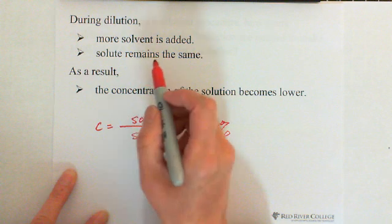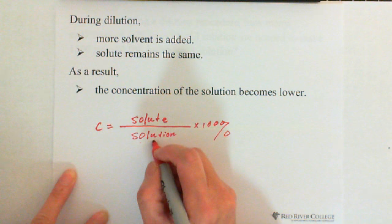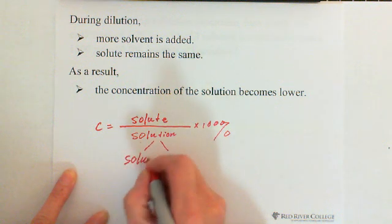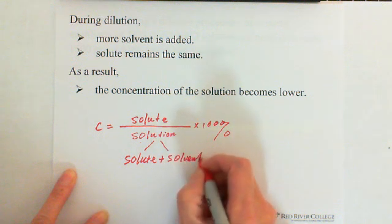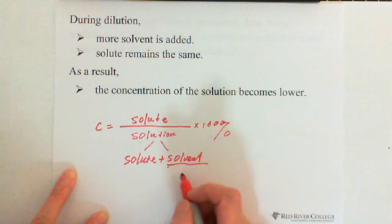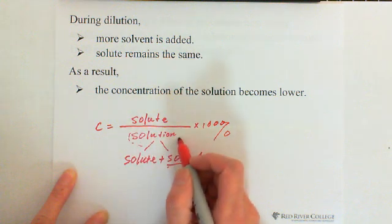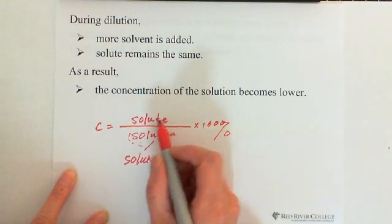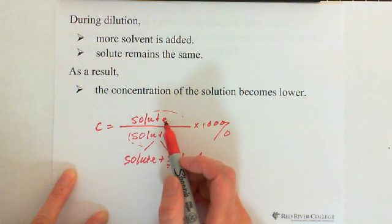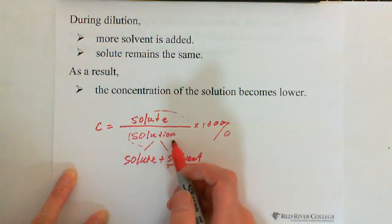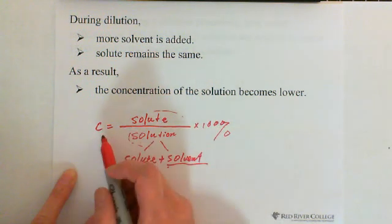When you add more solvent, the solution equals solute plus solvent. When you add more solvent, solute stays the same, so the volume of solution gets more, but solute stays the same. So in this situation, this is a fraction — when the numerator stays the same and the denominator gets greater, the fraction gets smaller. So that's why the concentration gets smaller.